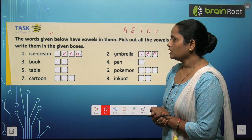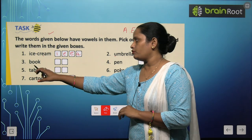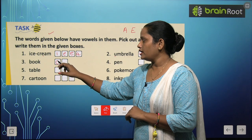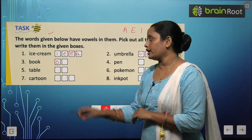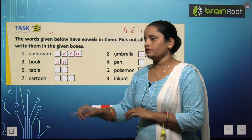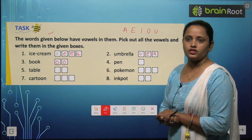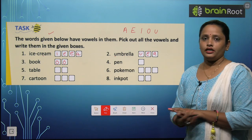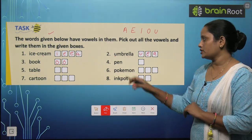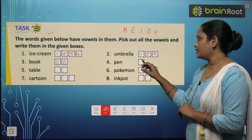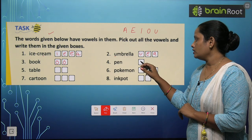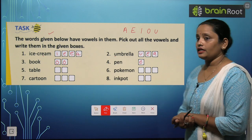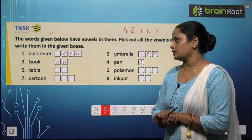Now the third word is book. B is a consonant. O is a vowel. And K is a consonant. Now the fourth word is pen. P is a consonant. E is a vowel — let's write it here. And the next N is a consonant.